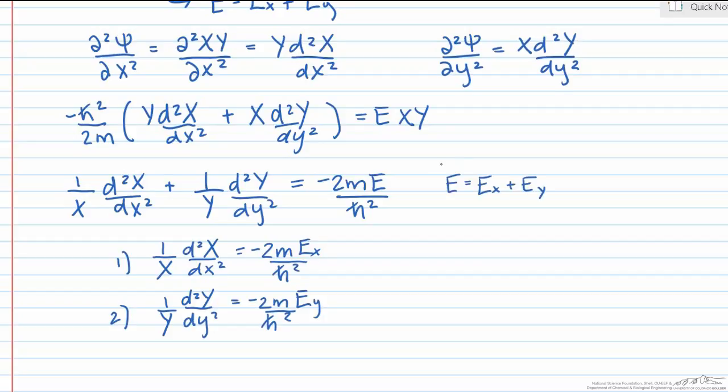By substituting e equals e sub x plus e sub y, we've set each term equal to the constant minus 2m e over h bar squared, where the corresponding energy values are used.